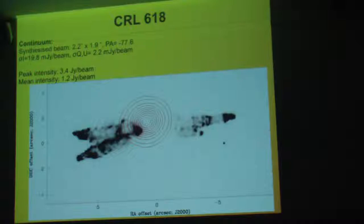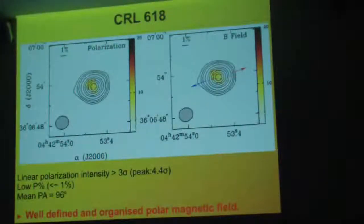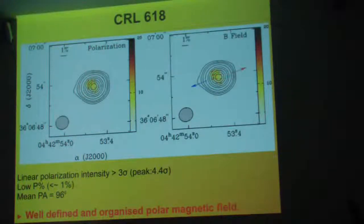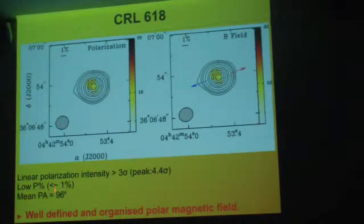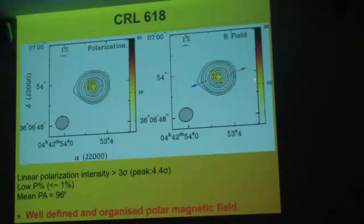What about the polarization? On the left you have the polarization — this is the direction of the dust. What you can see is that all of our vectors are well aligned, well constrained, in one direction, and this direction is the equator of our object. We detect linear polarization above 3 sigma, with a peak at 4.4 sigma. This object has a really low polarization, around one percent. The mean polarization angle is around 96 degrees. So if you rotate your polarization vector, you get the direction of the magnetic field.